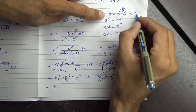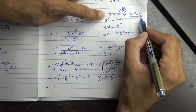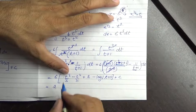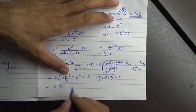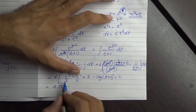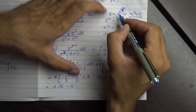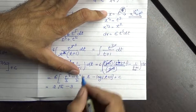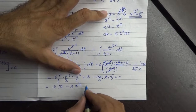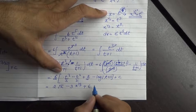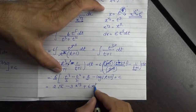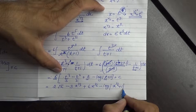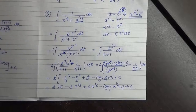t की value back substitute करते हैं: x^(1/6) = t। t³ = (x^(1/6))³ = x^(1/2) = √x। t² = x^(1/3)। t = x^(1/6)। Final answer: 6 · [x^(1/2)/3 - x^(1/3)/2 + x^(1/6) - log|x^(1/6) + 1|] + c। यह आपका integration complete हो गया।